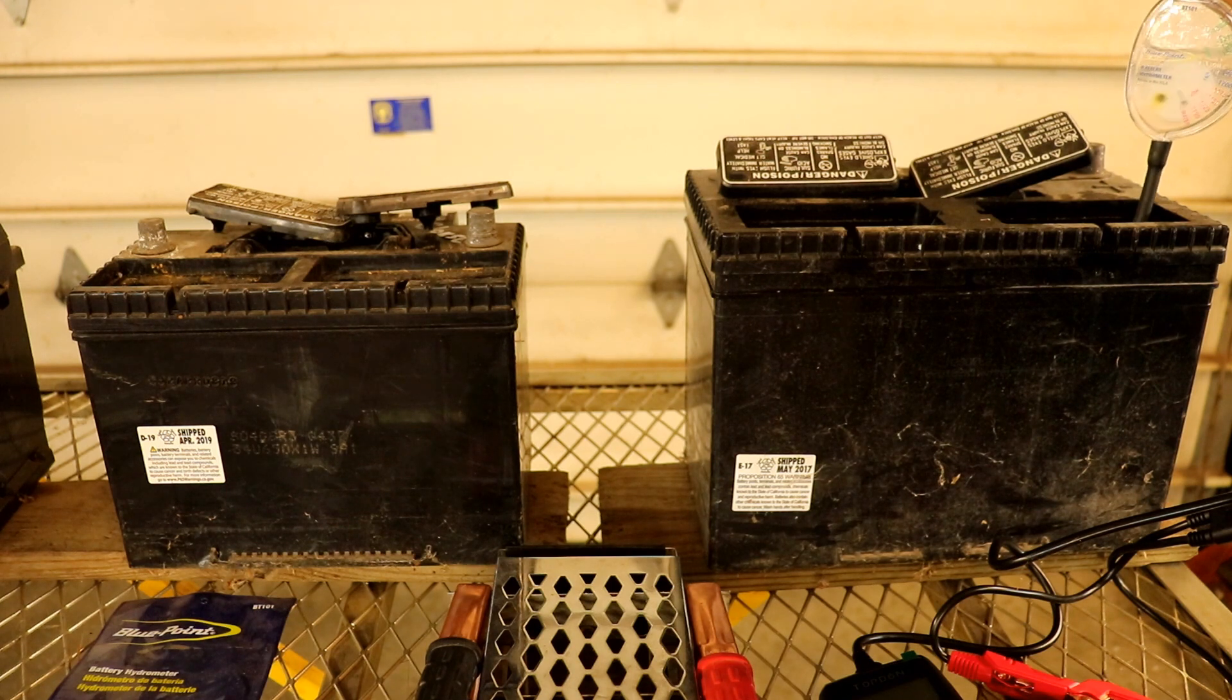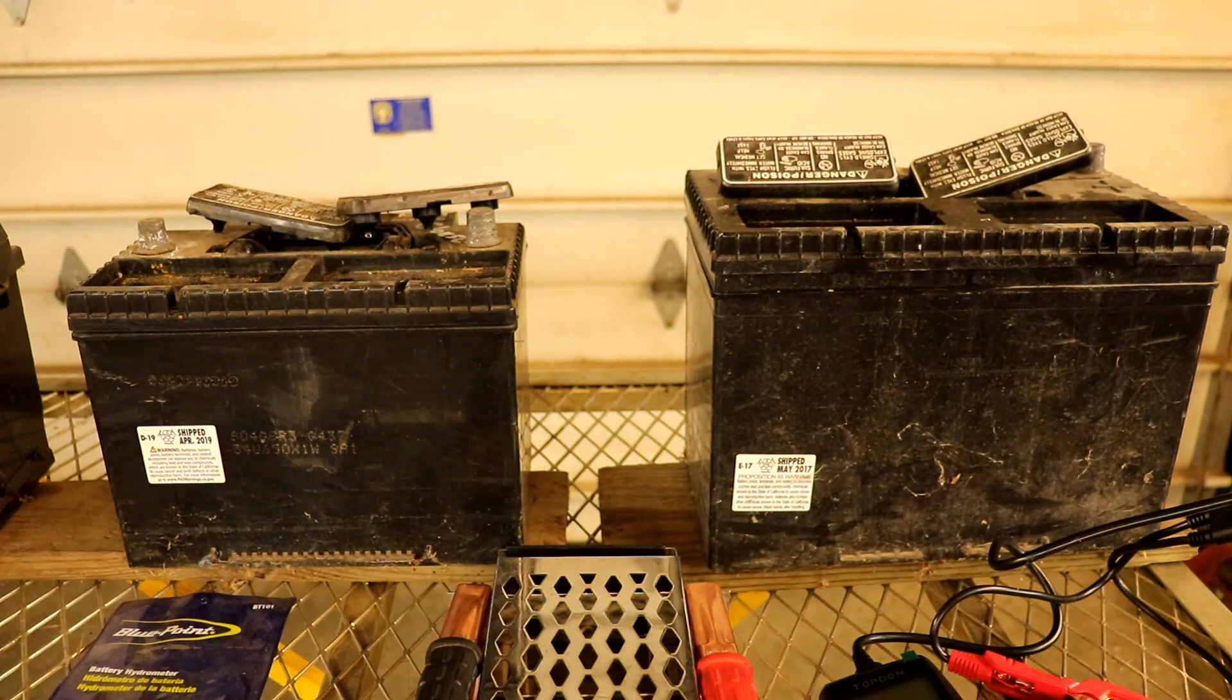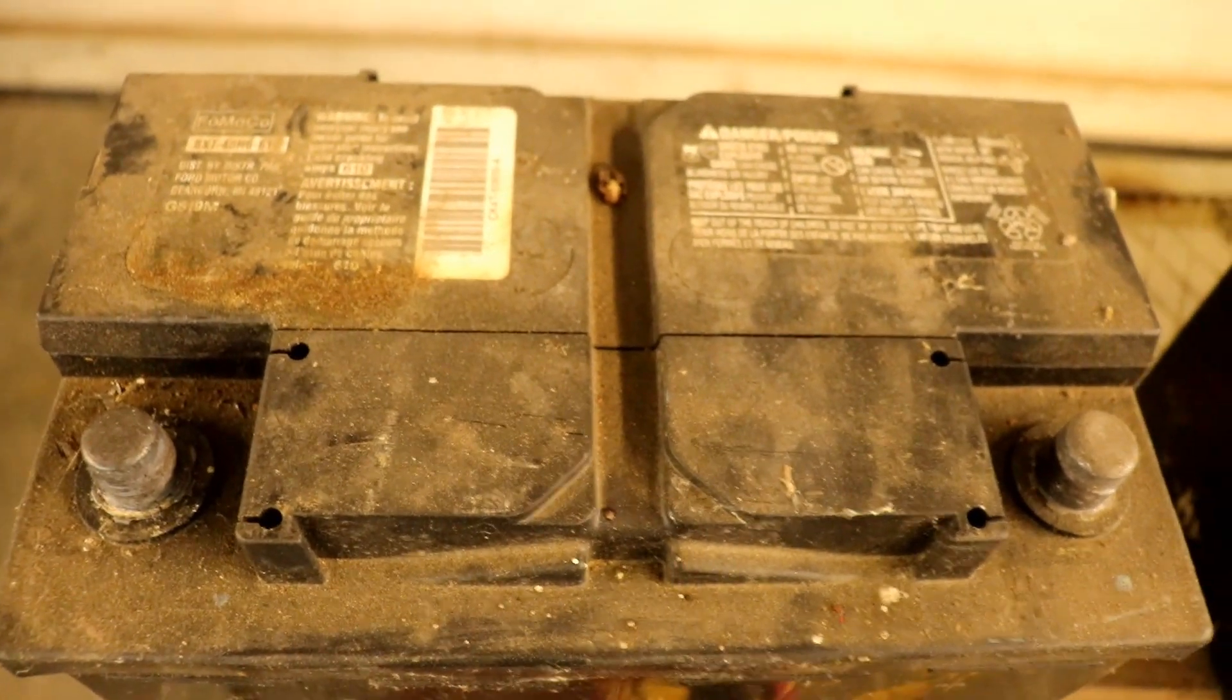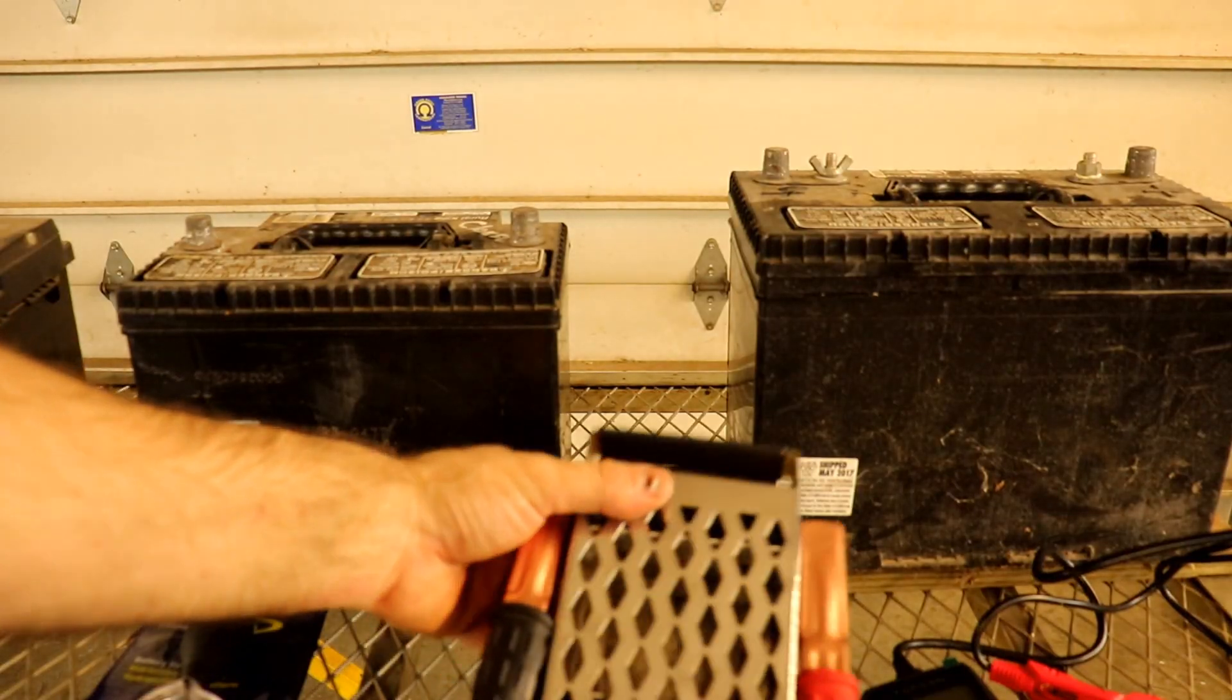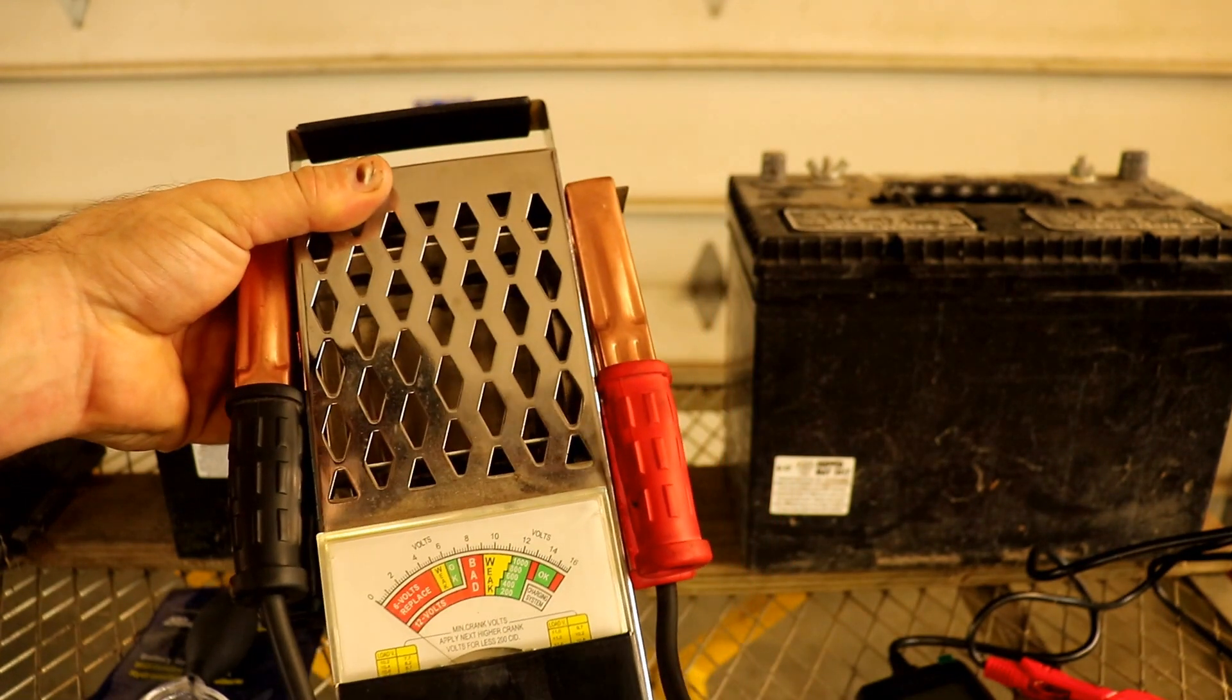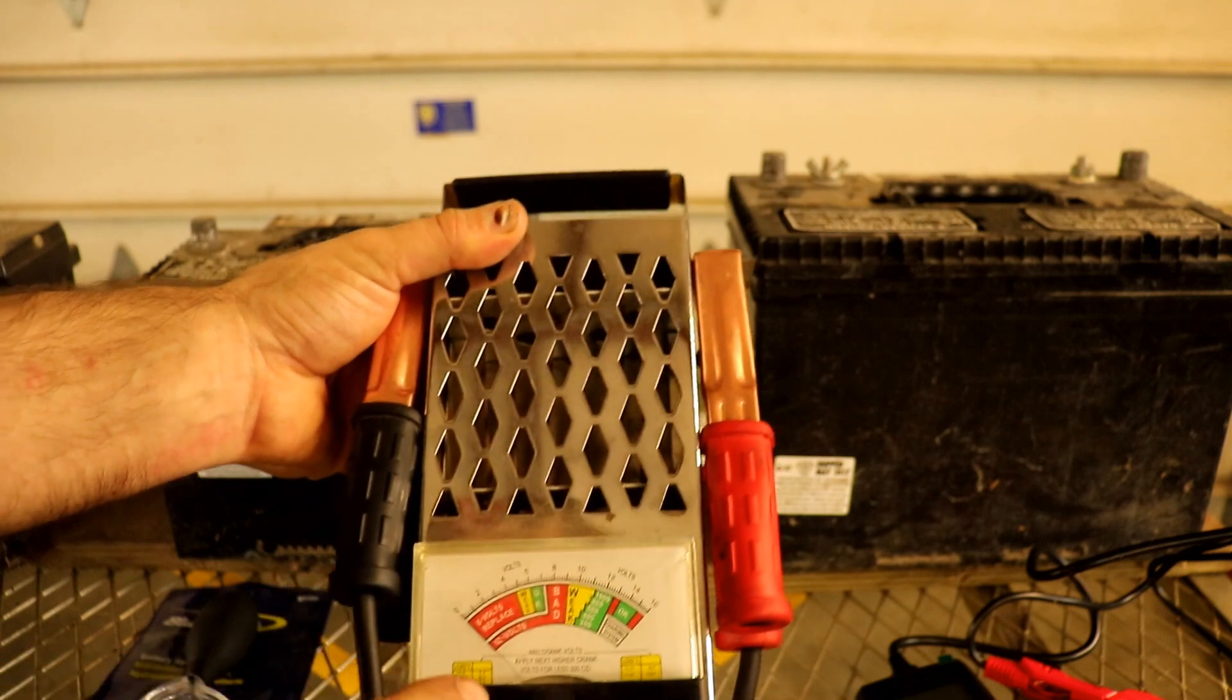After checking both batteries with a multimeter and the battery hydrometer, both batteries are looking pretty good. So to check a battery with the hydrometer you have to remove the caps, and that's fine unless you have a maintenance-free battery like this. You cannot remove the caps off this battery, so this tool is completely useless on a maintenance-free battery. The next tool I just wanted to mention is a load tester. Unless you buy a load tester that's very expensive, they aren't worth buying. This one gives an inaccurate reading, so I'm not going to be using it for this video.